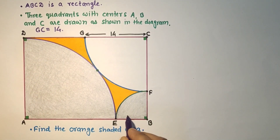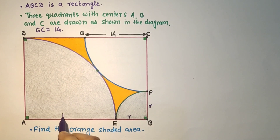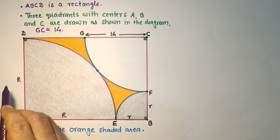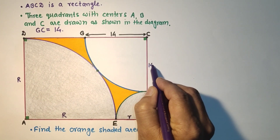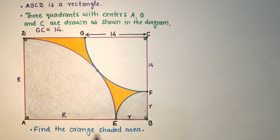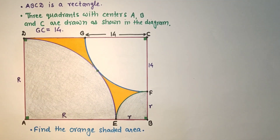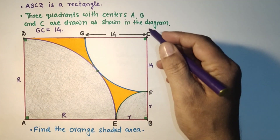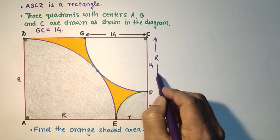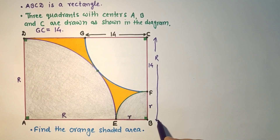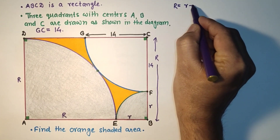Let this radius be r and this is r. This is big radius R and this is r. Since this is 14, this will also be 14. Since this is a rectangle, opposite sides are equal, so AD is capital R. So this is R, and that is equal to R = r + 14.